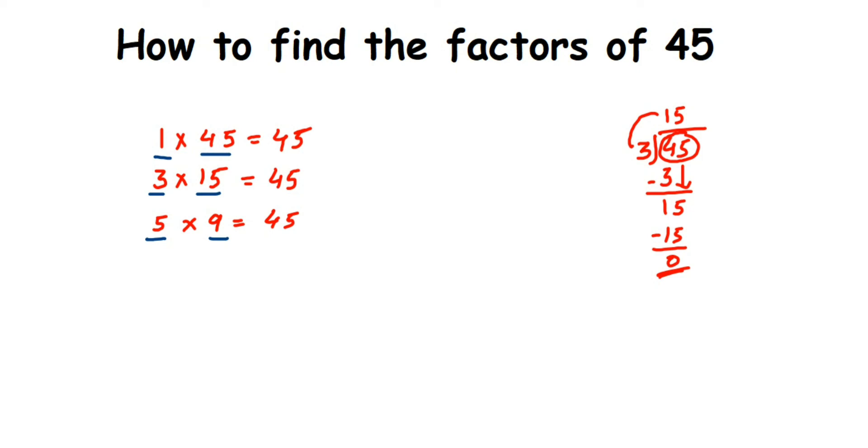Therefore, the factors of 45 are 1, 3, 5, 9, 15, and the number itself, which is 45. This is how you can check for the factors. I hope this is clear. In case you have any questions or doubts, you can drop a comment below. Thank you so much for watching.